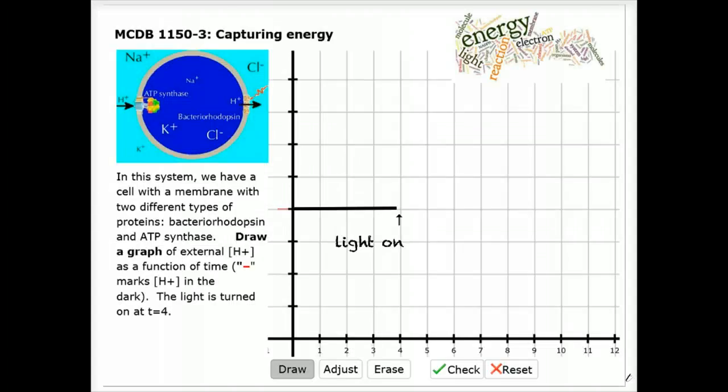We can start thinking about how this system behaves by using a little toy model. Here's a cell that has only the bacteriorhodopsin molecule in its membrane and the ATP synthase in its membrane. In the absence of light, the hydrogen ion concentration across the membrane is equal on both sides.